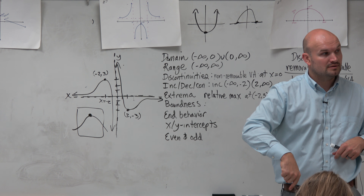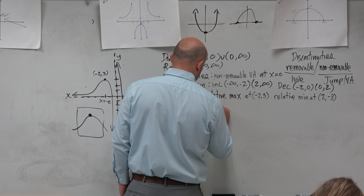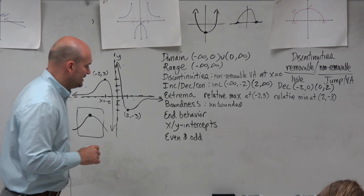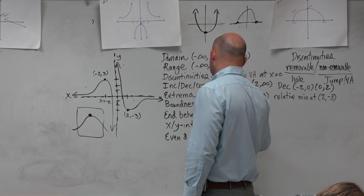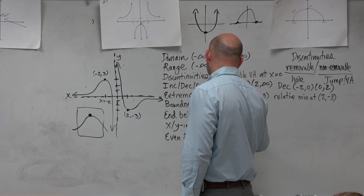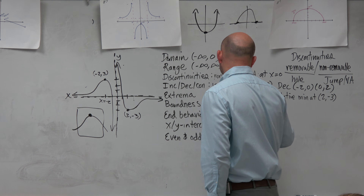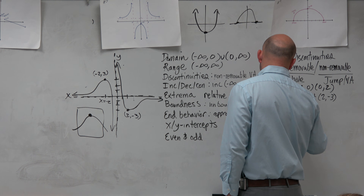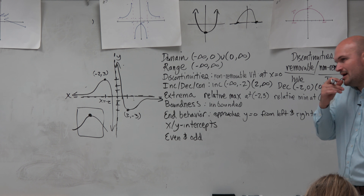Boundedness is another way to say how is the graph restricted. Looking at this graph continuing going up and down — boundedness is about the range. Is there any restriction on how low or how high we're going? No — looking at the maximum or minimum values. This graph is unbounded.